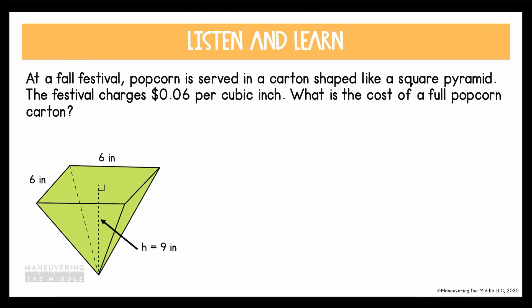Let's look at a word problem together. Sometimes word problems have us do multiple steps, so we have to pay close attention to what it's asking. This one says: at a fall festival, popcorn is served in a carton shaped like a square pyramid. The festival charges six cents per cubic inch. What is the cost of a full popcorn carton? Nowhere did it say find the volume — it gives us a clue when it says six cents per cubic inch. Remember, when measuring volume we're always talking about cubic inches, feet cubed, cubic centimeters — the dimension is always cubed.